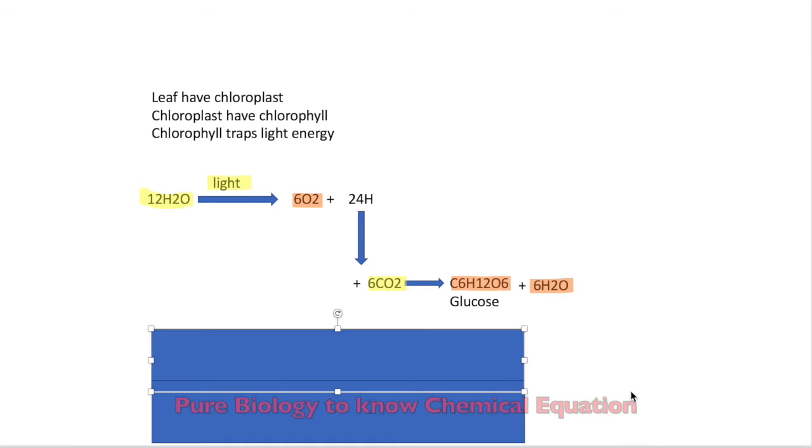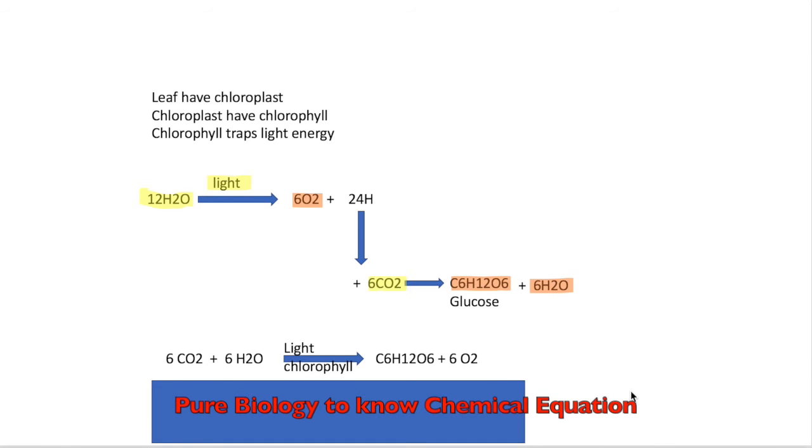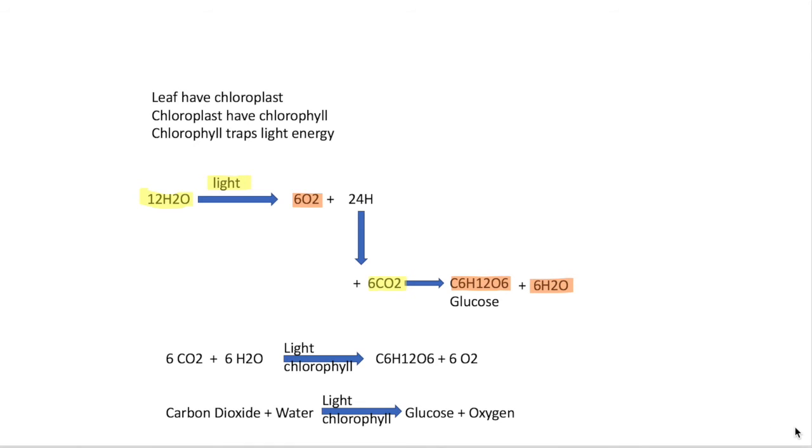The overall equation for photosynthesis is this. The overall word equation for photosynthesis is this. For plants to do this, they trap light energy from the organ called the leaf.